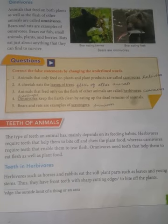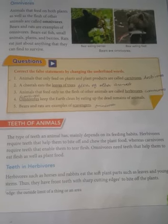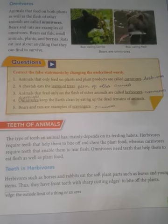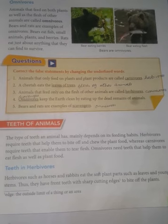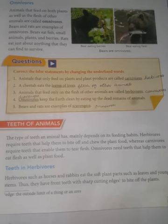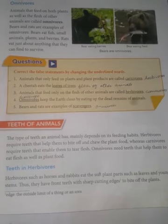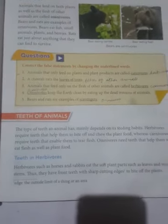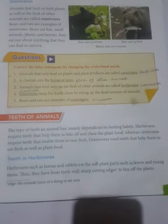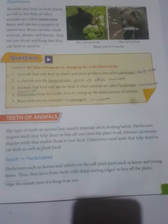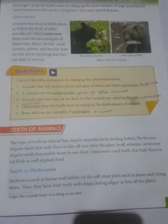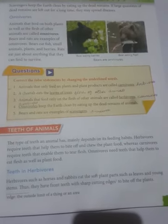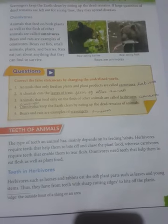Question four: omnivores keep the earth clean by eating up the dead remains of animals — no, abhi humne padha, scavengers hain woh. Question five: bears and rats are examples of scavengers — no, bears and rats are not scavengers examples. These are examples of omnivores. So this was about the eating habits of animals and their categories on the basis of this.